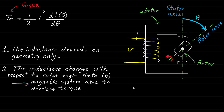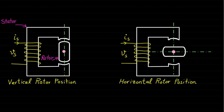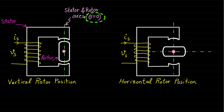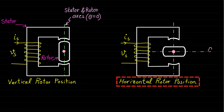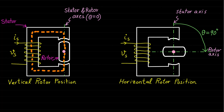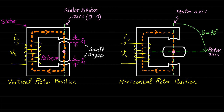To give more details about these two points, let's assume the rotor is at two positions. The first is the vertical rotor position where theta equals 0. The second is the horizontal rotor position where theta equals 90 degrees. As you can see, the magnetic field path flows through different geometries or different air gaps in the two cases. The vertical position has small air gap length L1, and the horizontal position has large air gap length L2. Therefore, these two cases have two different reluctances and two different inductances.